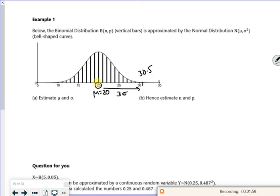But if you put whatever you put on it, we'll find. So mu plus 3 sigmas would be 30.5. Mu is 20, so I can just rearrange it. So I know that mu is 20 and sigma is 3.5.